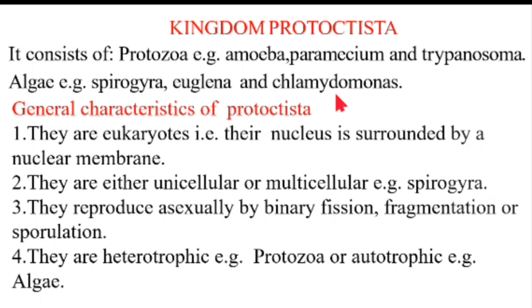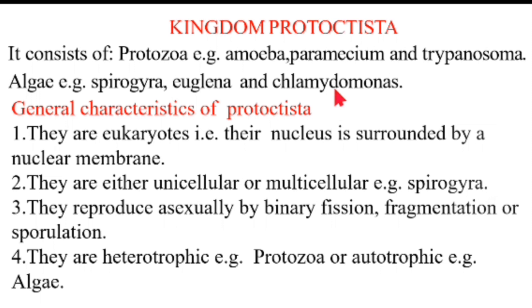General characteristics of Kingdom Protoctista: number one, they are eukaryotes — eukaryotes means that their nucleus is surrounded by a nuclear membrane. The opposite of eukaryote is a prokaryote, meaning prokaryotes lack the nuclear membrane. Number two, they are either unicellular — meaning they are single-celled organisms — or some are multicellular, having many cells.